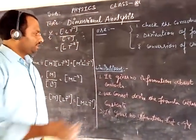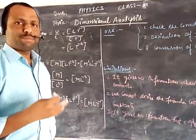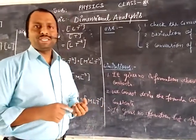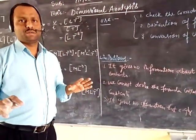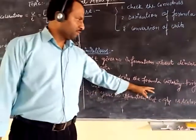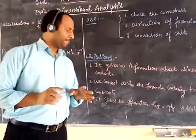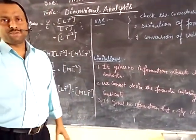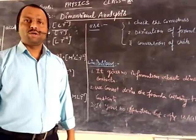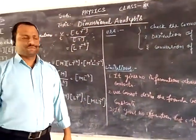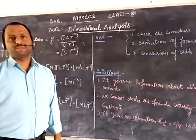Next are the limitations of dimensional analysis. First, it gives no information about dimensionless constants — for example, the value of pi or exponential constants cannot be calculated through dimensional analysis. Second, it gives no information about constant values. Third, we cannot derive formulas containing trigonometric functions such as sin theta, cos theta, tan theta, etc. Fourth, it gives no information about whether the quantity is a scalar or vector. These are the certain limitations of dimensional analysis. In the next part, we will learn how to check the correctness of a formula.